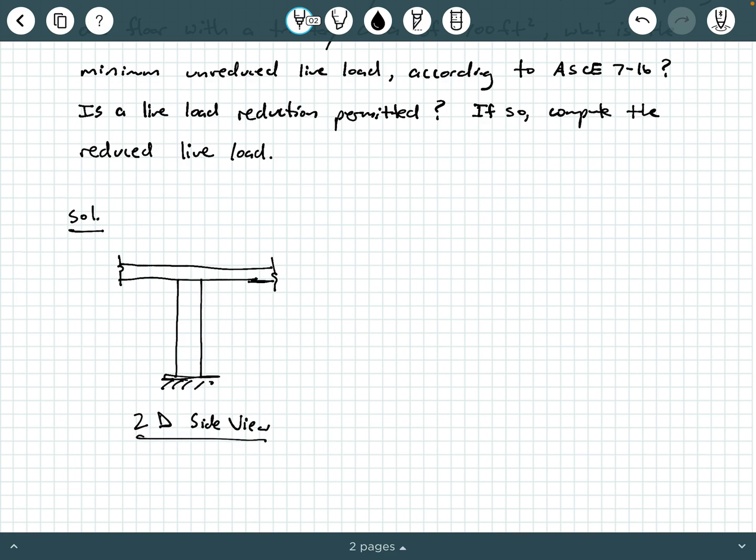Now, let's go ahead and draw maybe a 3D view of what this could look like. So let's say that our column here in three dimensions may look something like this, and it's kind of fixed at the ground here. And it's supporting a segment of an office building floor. So let's say that it's supporting some kind of segment like this. Not my best artwork, but something like that.